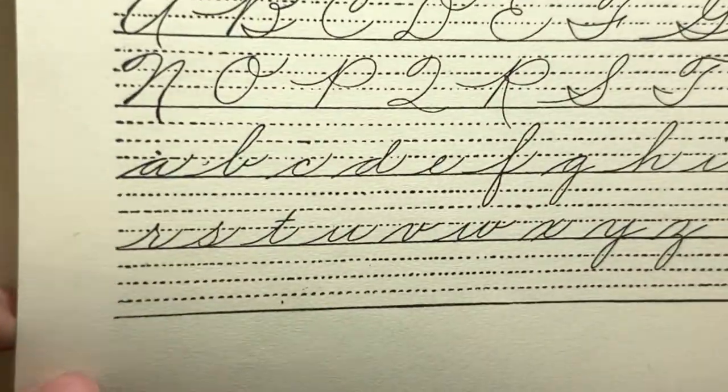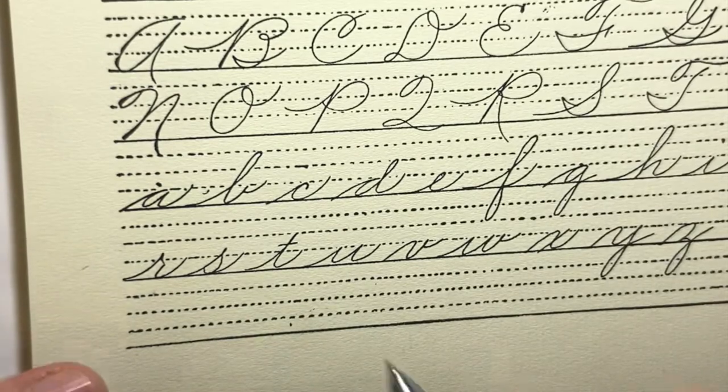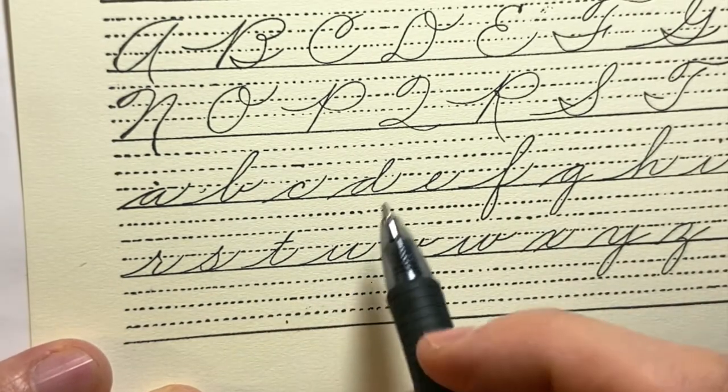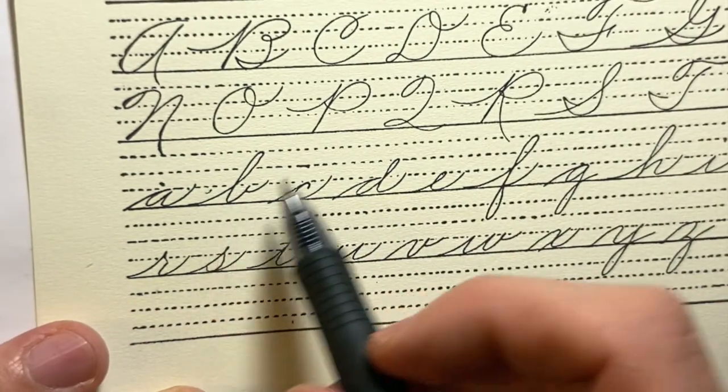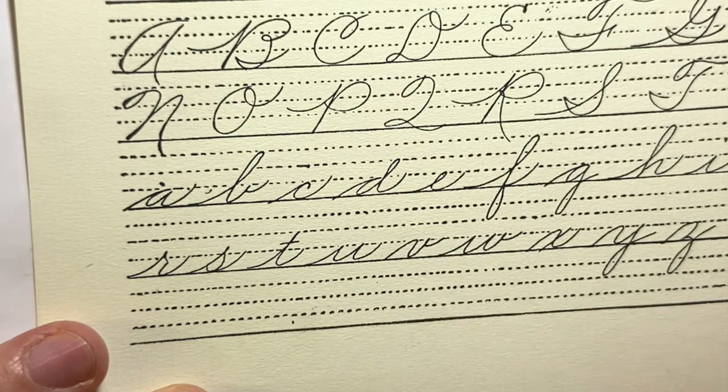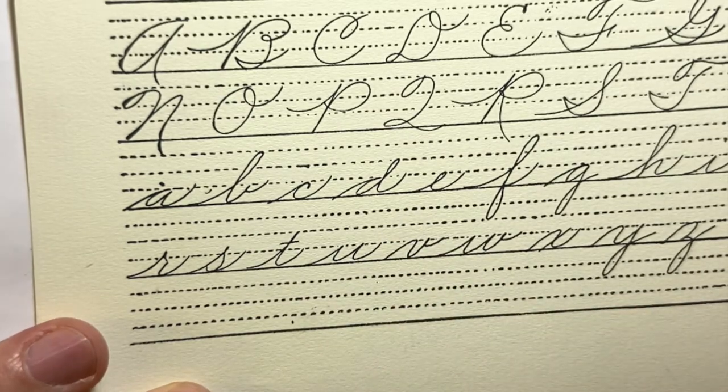And if we look at, I have an exemplar from the Champion Method right here. You can see how wide this script is. If you've looked at any of the letters, you see how much space each of these letters takes up horizontally. It's a very wide spacing. Same for Spenserian.